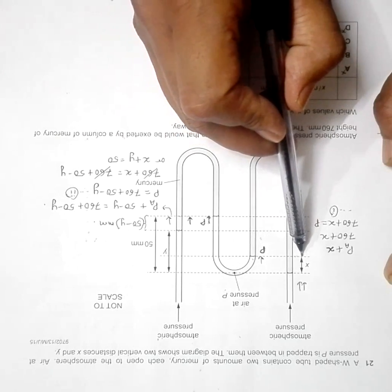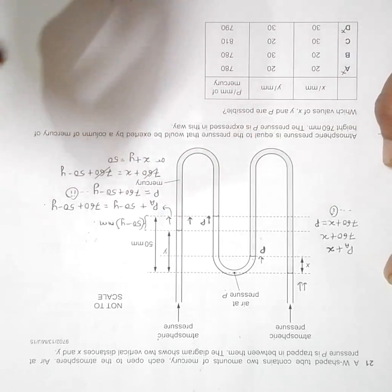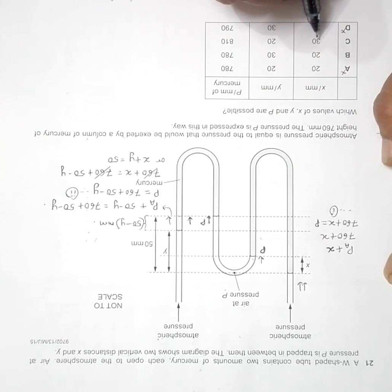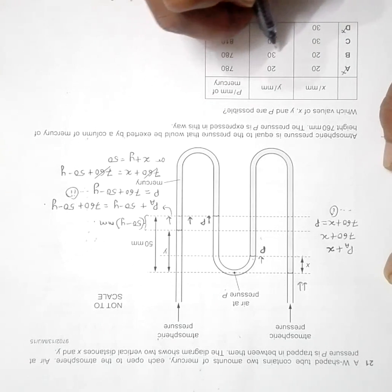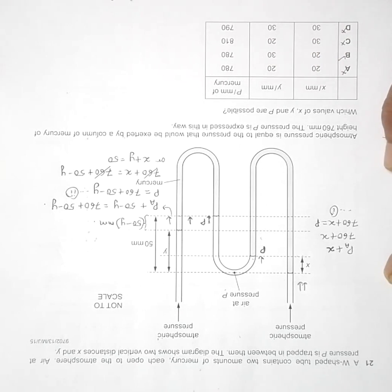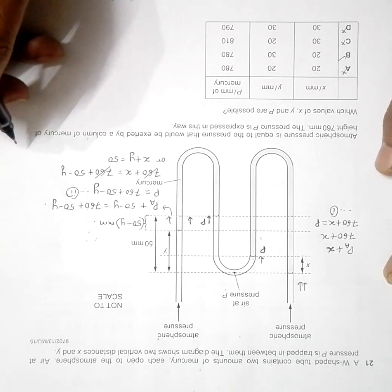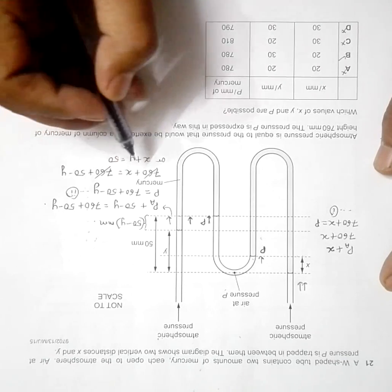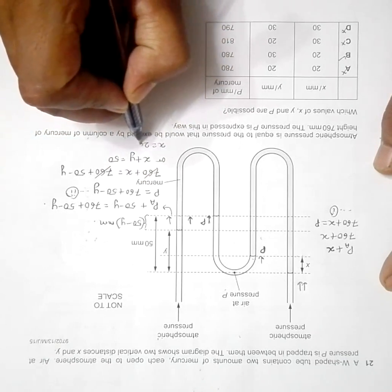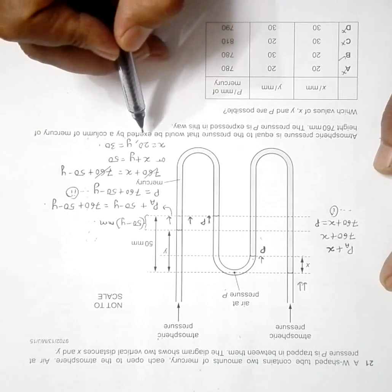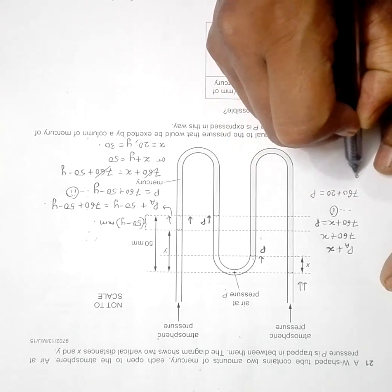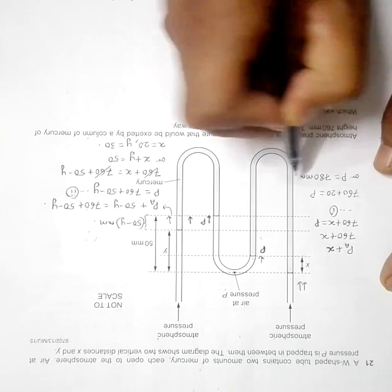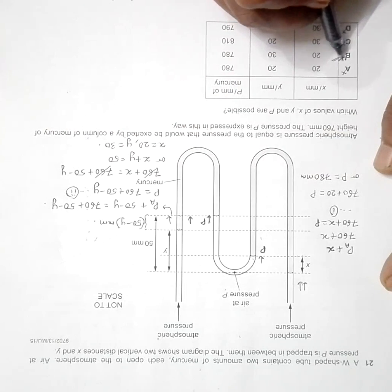From the diagram, x is the smaller distance and y is the larger one. Among the remaining choices, we need a larger y and a smaller x. Option C is not correct, so choice B is the answer. To confirm: with x equals 20 and y equals 30, substituting into equation one gives P equals 760 plus 20 equals 780 mm Hg, which matches choice B.